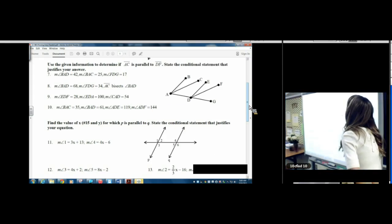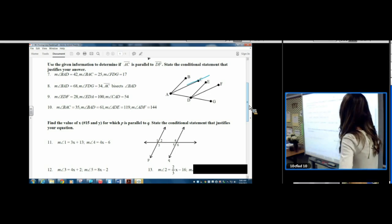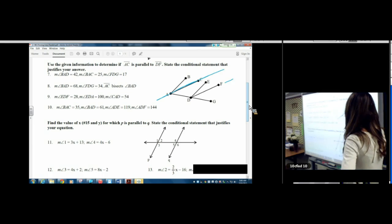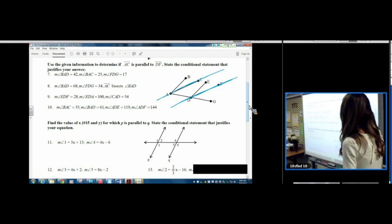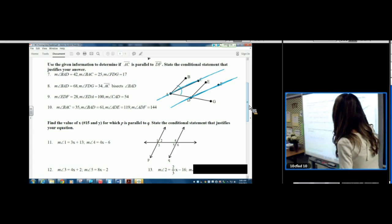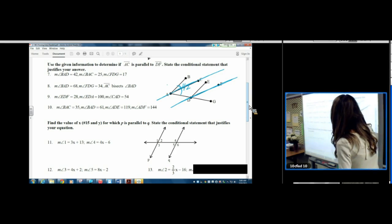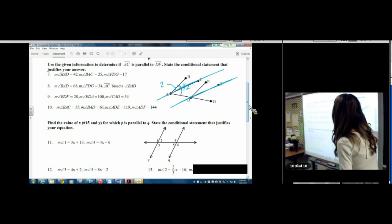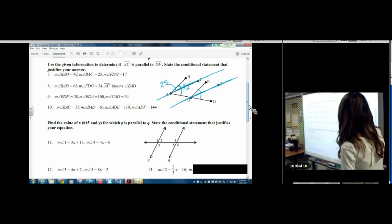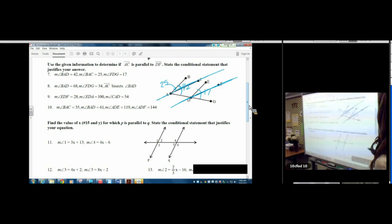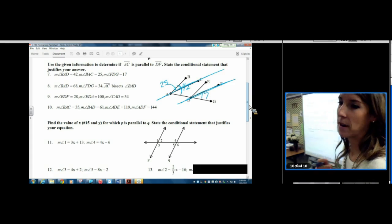Number seven. Use the given information to determine if AC is parallel to DF. So here's the ones we're looking at. AC. DF. Angle BAD is 42. So this whole angle, I'm going to put an arc, because it's the whole angle, is 42. BAC is 25. I'm just going to put a little arrow. That one's 25. And FDG is 17. Right here. That's where the 17 goes.